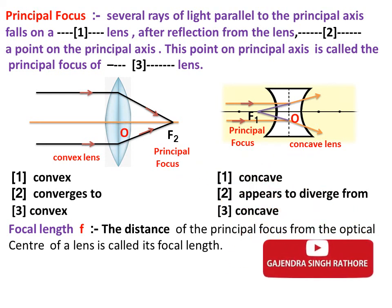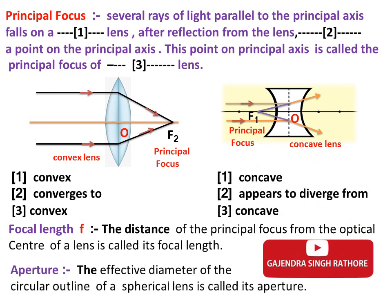The last definition is aperture. The effective diameter of the circular outline of a spherical lens is called its aperture. Such lenses are called thin lenses with small aperture.